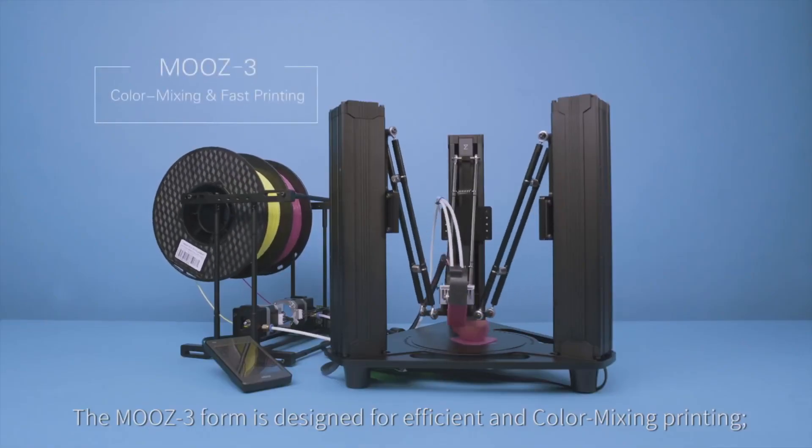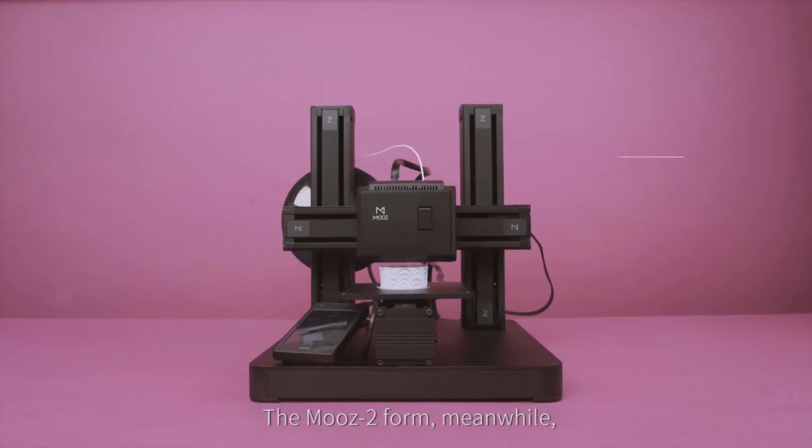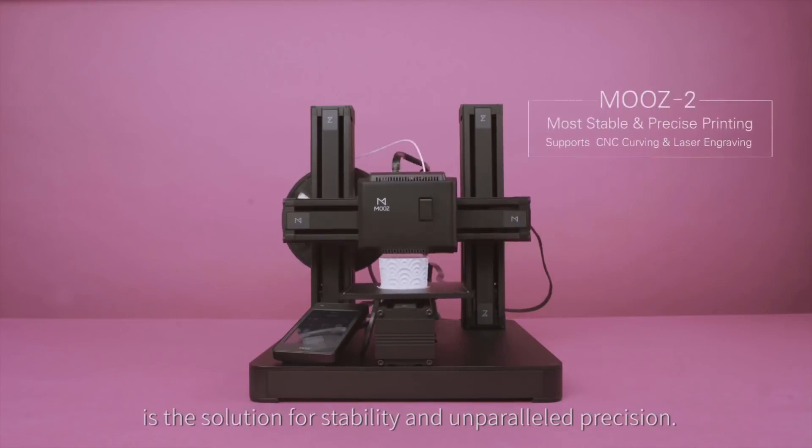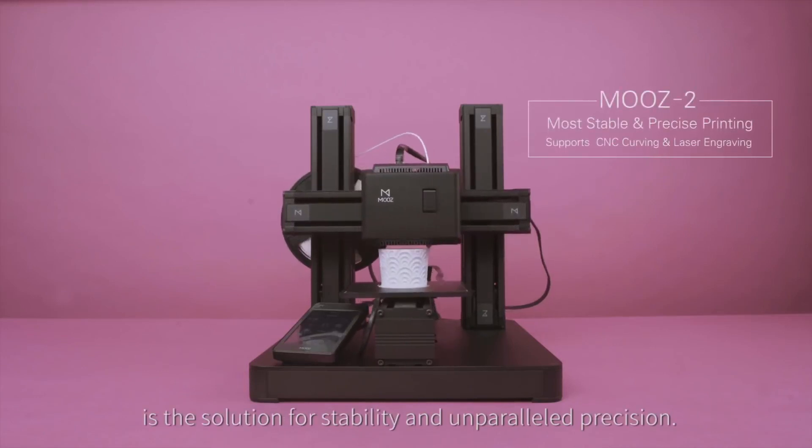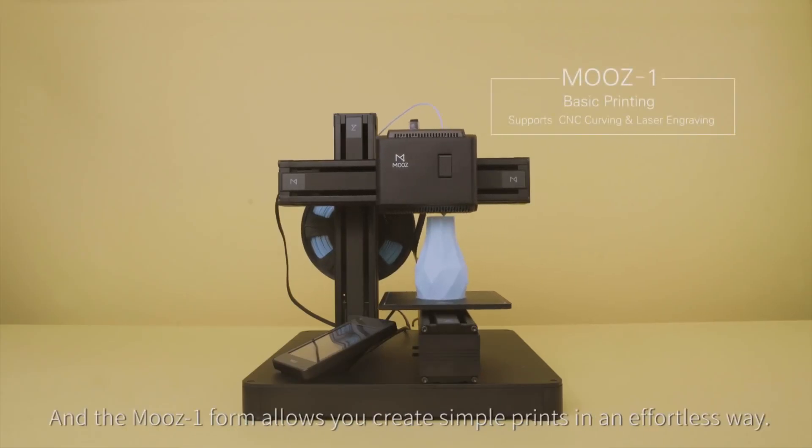The Moose 3 form is designed for efficient and color mixing printing. The Moose 2 form meanwhile is the solution for stability and unparalleled precision. And the Moose 1 form allows you to create simple prints in an effortless way.